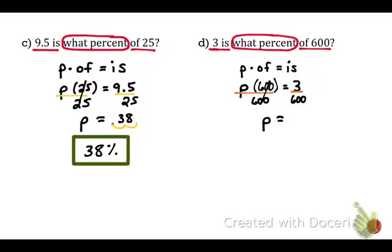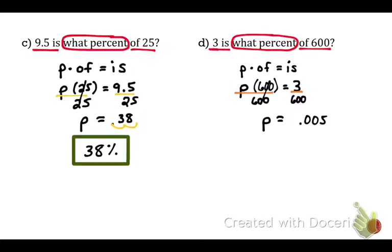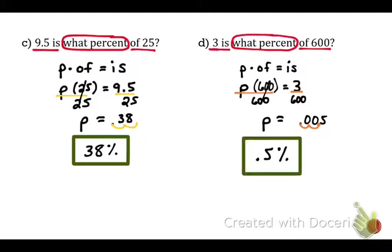3 divided by 600 equals 0.005. We don't need the leading zero. Since the problem asks for the percent, move the decimal point two places to the right. The answer is 0.5%.